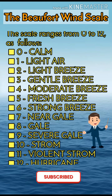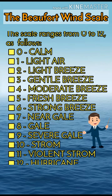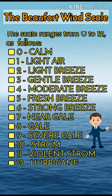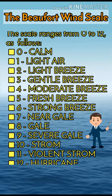Scale 0: Calm. 1: Light Air. 2: Light Breeze. 3: Gentle Breeze. 4: Moderate Breeze. 5: Fresh Breeze. 6: Strong Breeze. 7: Near Gale. 8: Gale. 9: Severe Gale. 10: Storm. 11: Violent Storm. And 12: Hurricane.